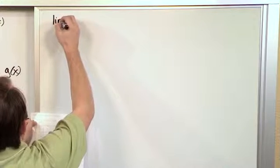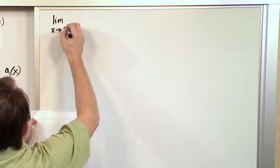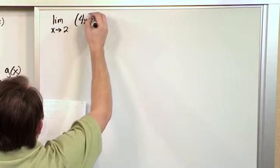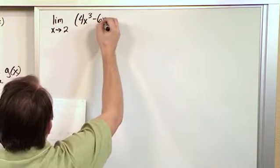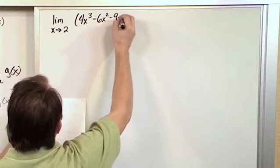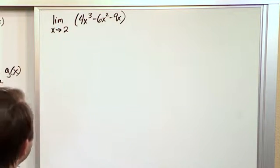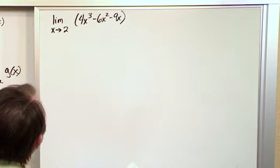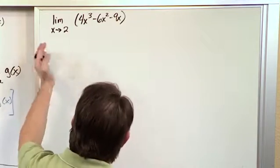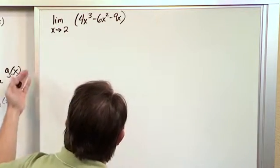What if I have the limit as x approaches 2 of the function 4x cubed minus 6x squared minus 9x. Okay so this is your classic polynomial. What do you think is going to apply here? Well I've already told you how would you do this. I said hey just plug it in, right? That's what I've already told you.